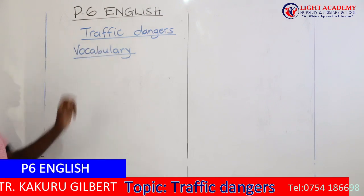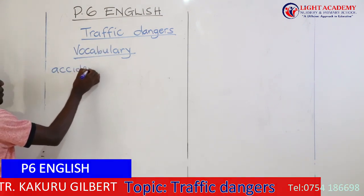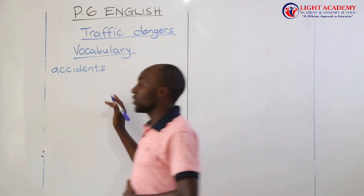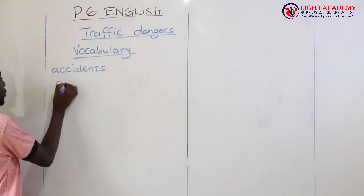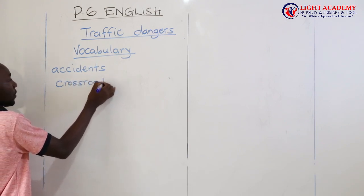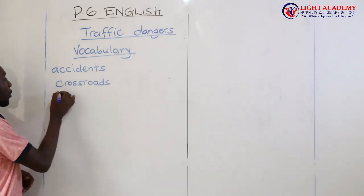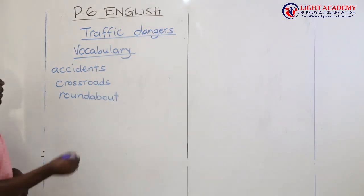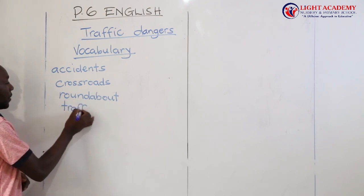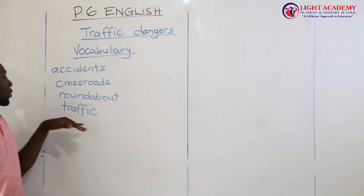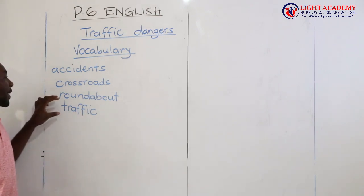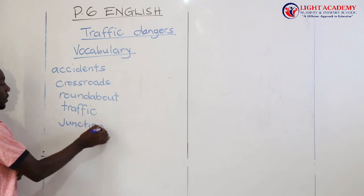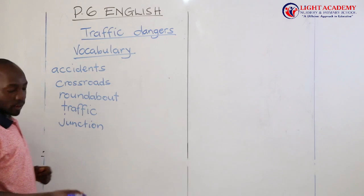Under this topic you can bring accidents. Apart from accidents, you can bring another one which is crossroads and roundabout. You can also bring in traffic — you can call it traffic lights, traffic signal, or traffic itself. Then you can also have the word junction. We also have island.